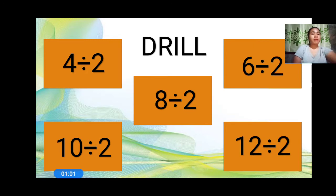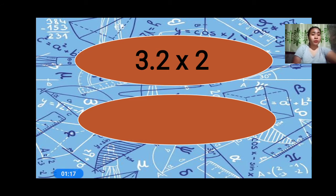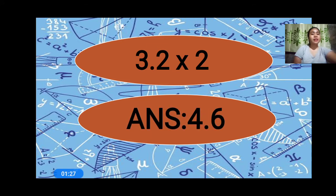So now, I'm going to show you an equation. Are you ready? So the first equation is 3.2 times 2. We are going to multiply 3.2 times 2. The answer is 4.6.